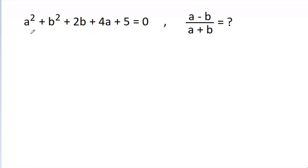In this video, we have been given that a squared plus b squared plus 2b plus 4a plus 5 is equal to 0, and we have to find the value of a minus b by a plus b.